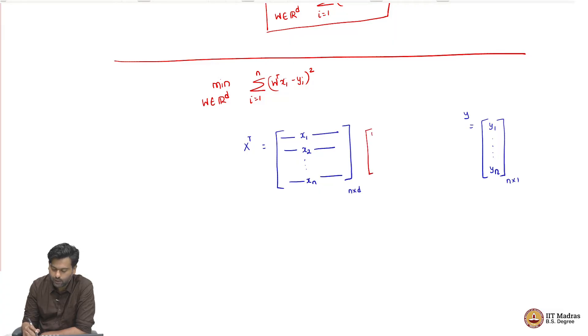Our parameter is a vector w1, w2, dot dot dot wd, which is a vector d cross 1. Basically, what we are saying is that you can rewrite this objective as follows: X transpose W minus Y, which is a vector whose norm squared we are trying to minimize.